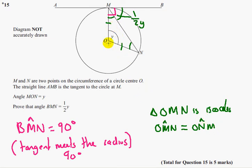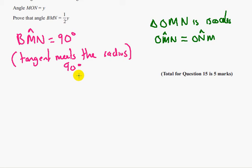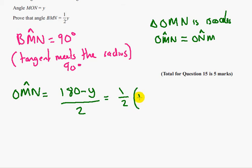So we can work out angle OMN. That's going to be 180 take away Y divided by 2. As these two angles are the same. So angle OMN is going to be 180 minus Y all divided by 2, or we could say half of 180 minus Y.